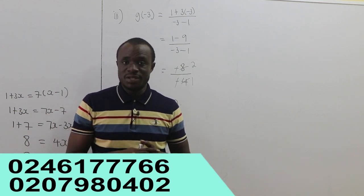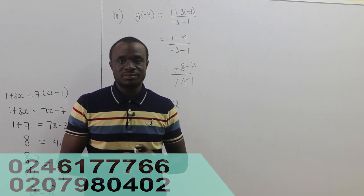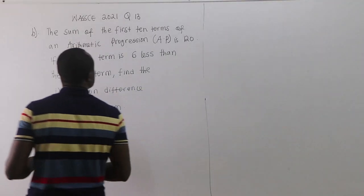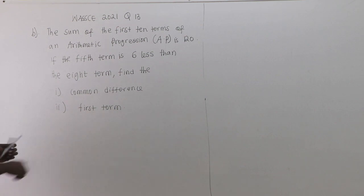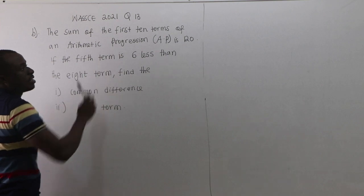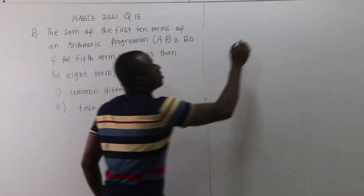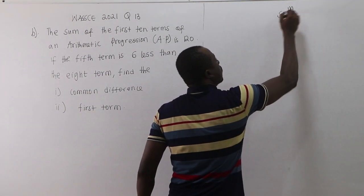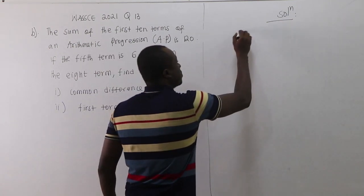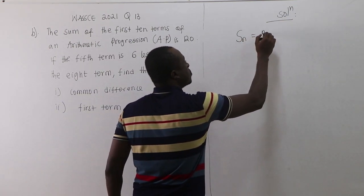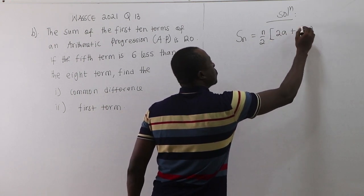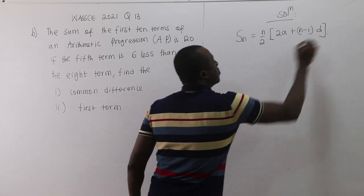Let's consider the B part — sequence and series. This is BECE 2021, question number 18, part B. The sum of the first 10 terms of an AP (arithmetic progression) is 120. The sum of an AP is given by: S_N = (N/2)(2A + (N-1)D).